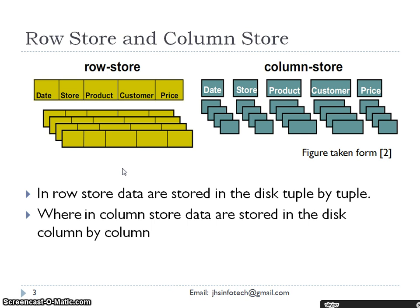In row storage, no matter how many entries you make, even if you are making entries only for three columns — for example, date, store, and product — empty columns are still created for customer and price. Customer and price will be blank and a record will be created. So we are creating a lot of blanks in row storage if you are not entering the entire row.